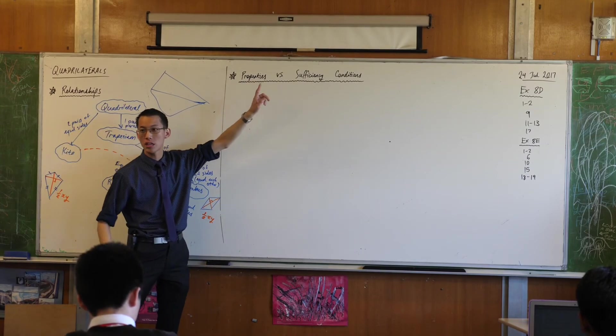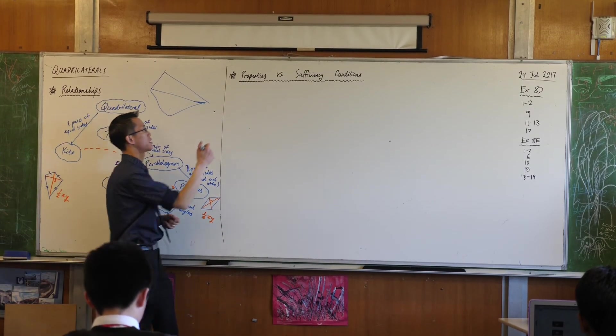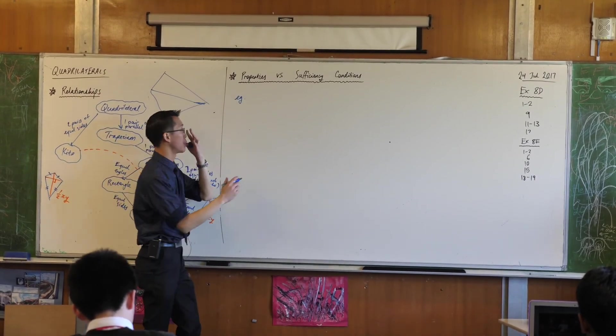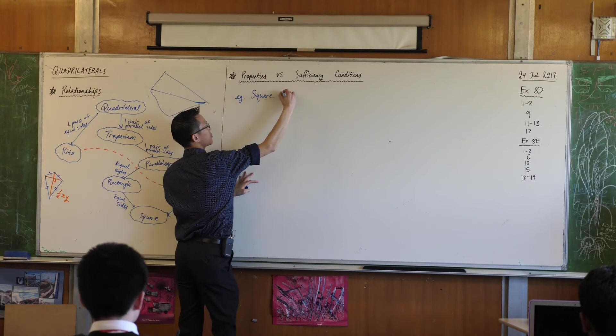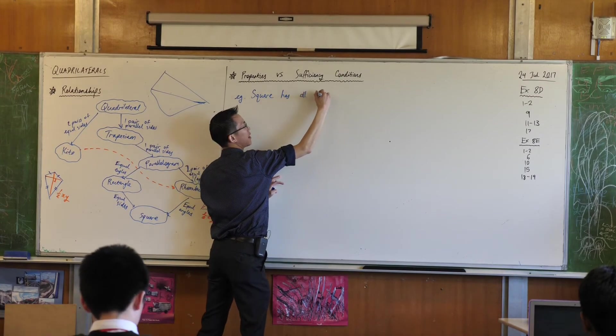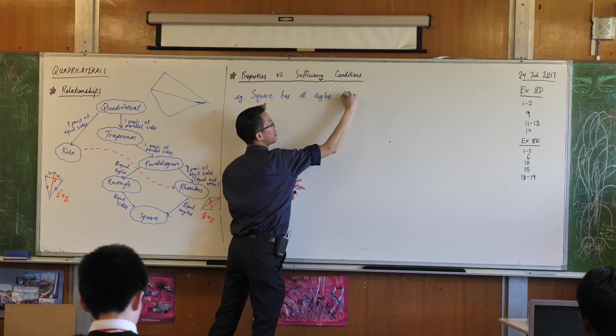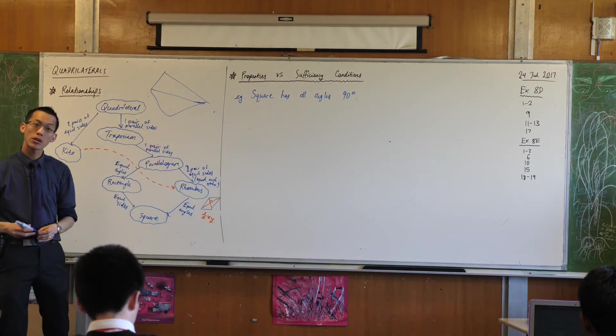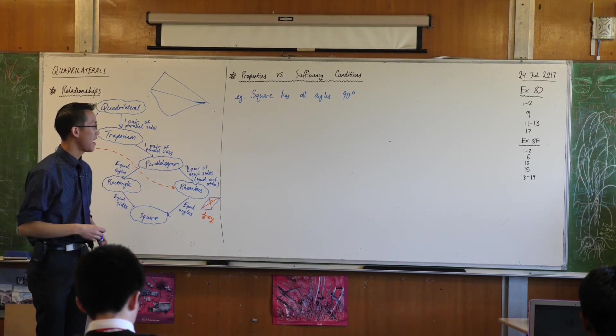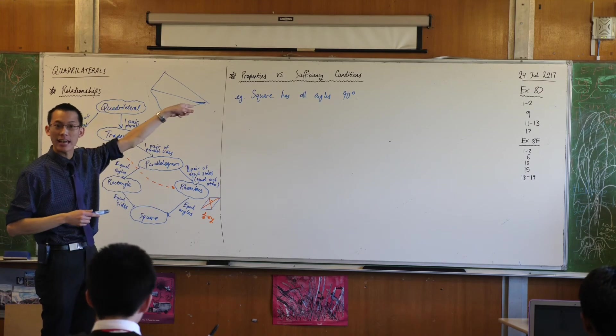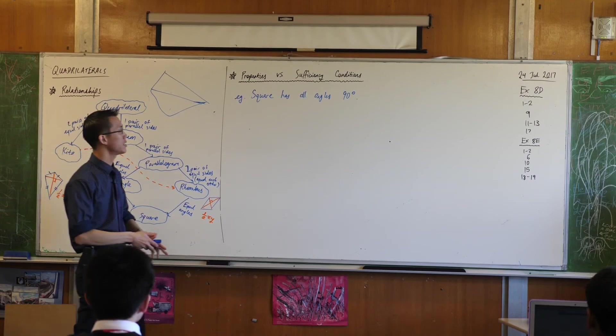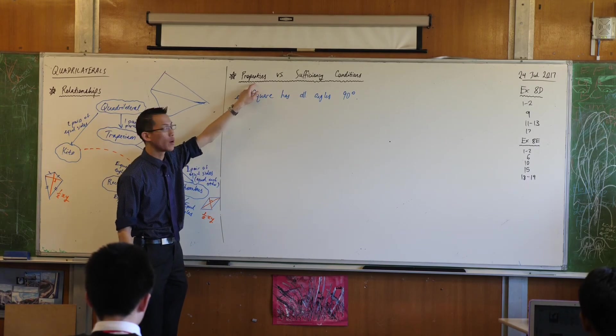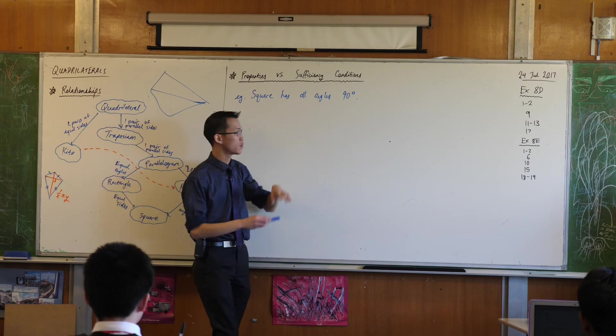But properties and sufficiency conditions are not the same thing. For example, here's just a counter example for you. A square has all angles equal to 90 degrees. So if you're given a square in a question and you want to do something with its angles, you can state that. You can pick out any of its angles and say, this must be 90 degrees. Reason, I am appealing to this property of a square. This is true. So this is a property.